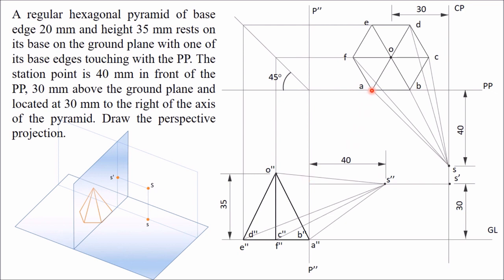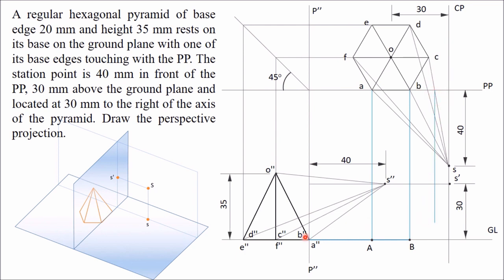For example, when you join S with A, you get the intersection point in the picture plane from the top view — draw a vertical line from there. When you join the side view station point S double dash with A dash, you get the intersection point in the picture plane from the side view — draw a horizontal line. These two lines meet at point A in the perspective view. Similarly for point B: draw the vertical line from the top view intersection and horizontal line from the side view intersection to get B. For point C, the same procedure gives you point C.